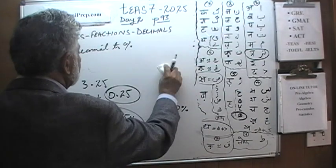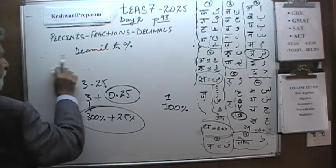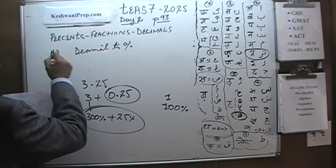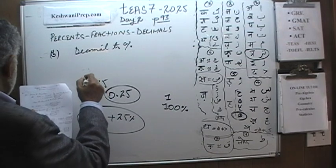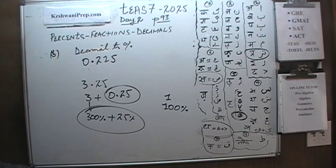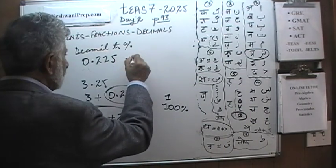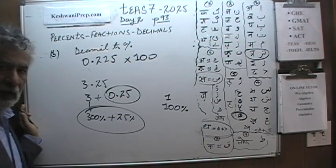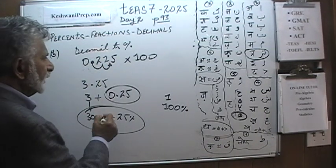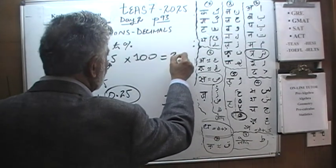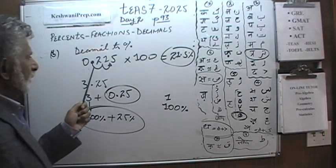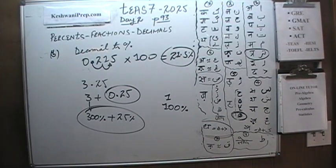Part B. In part B, we have again decimal to percentage, and we are given 0.215. We want to convert it into a percentage. We can multiply it by 100 — when we multiply by 100, we pick up our decimal and move it two places, one and two. It becomes 21.5%.